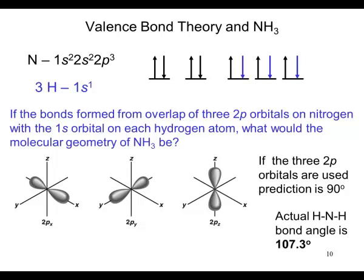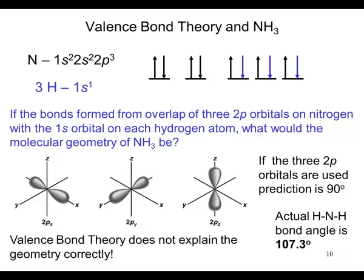The actual bond angle is 107.3 degrees. It is clear that valence bond theory does not explain the geometry correctly. We need a better bonding theory.